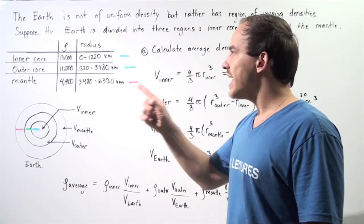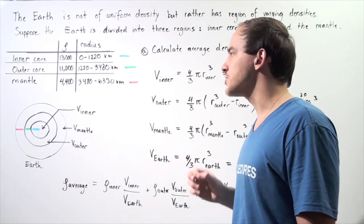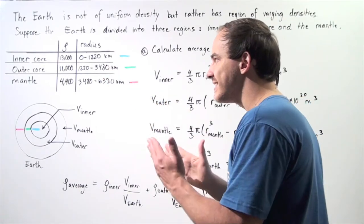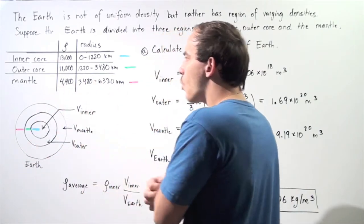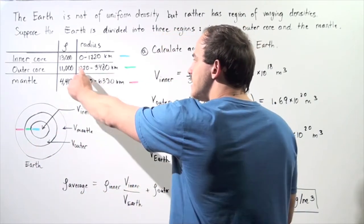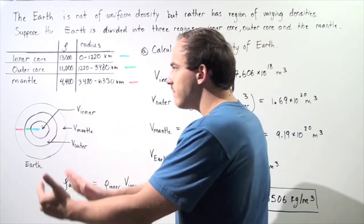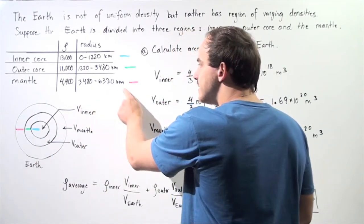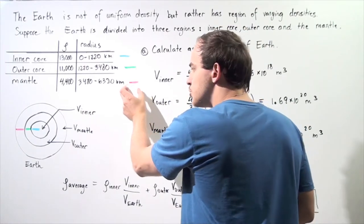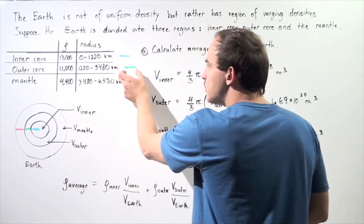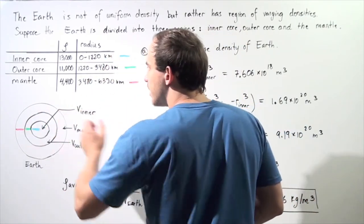The radius of the inner core is 1,220 kilometers. The radius, or the distance, from the beginning of the outer core to the end of the outer core is shown in green, and the distance from the beginning of the mantle to the end of the mantle is shown in red. So the red region shows the mantle, the green region shows the outer core, and the blue region shows the inner core.